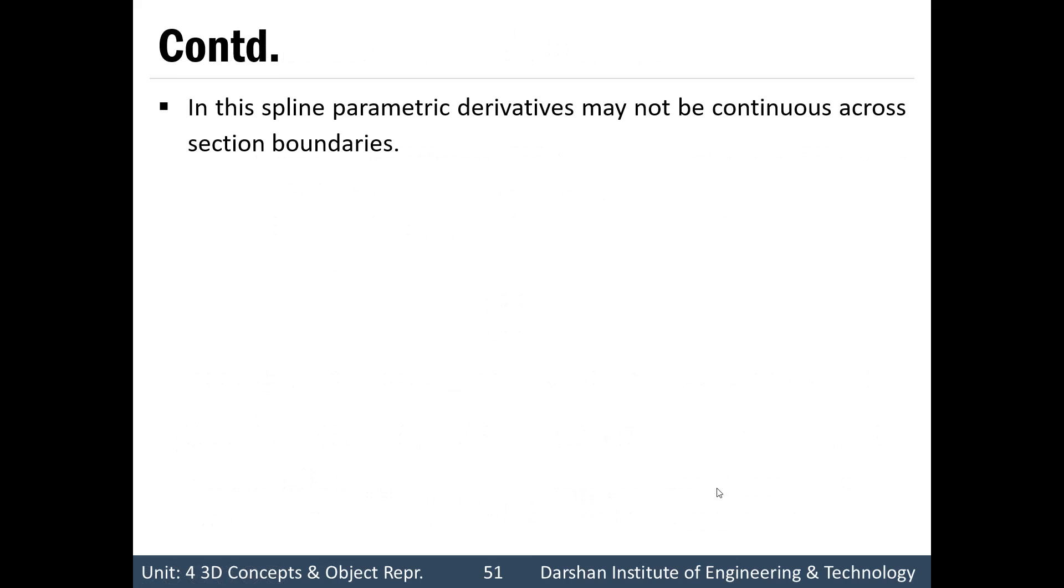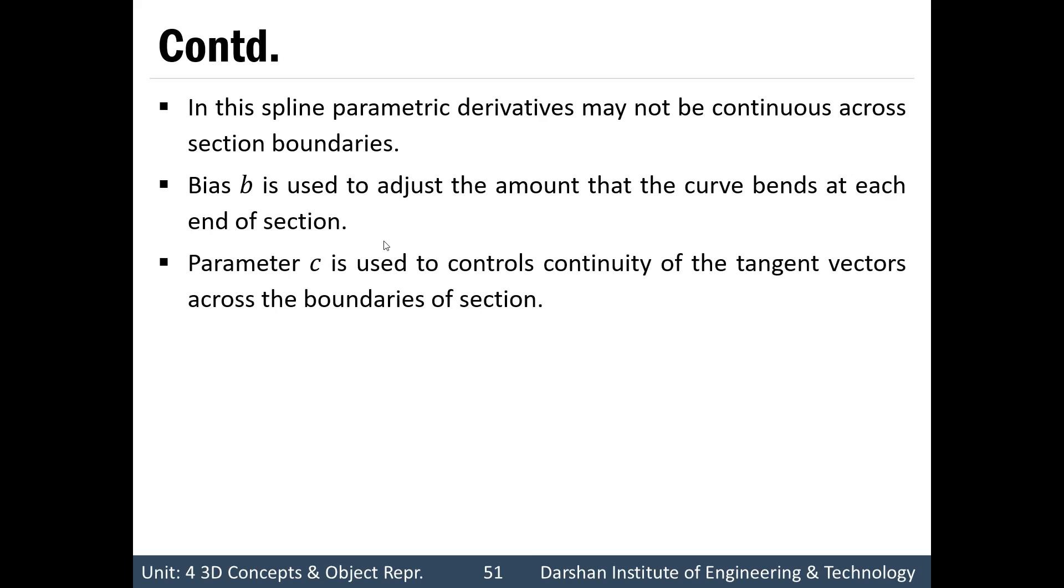In this spline, parametric derivatives may not be continuous across section boundaries. Bias b is used to adjust the amount that curve bends at each end of the section. Parameter c is used to control continuity of tangent vector across the boundaries of the section.